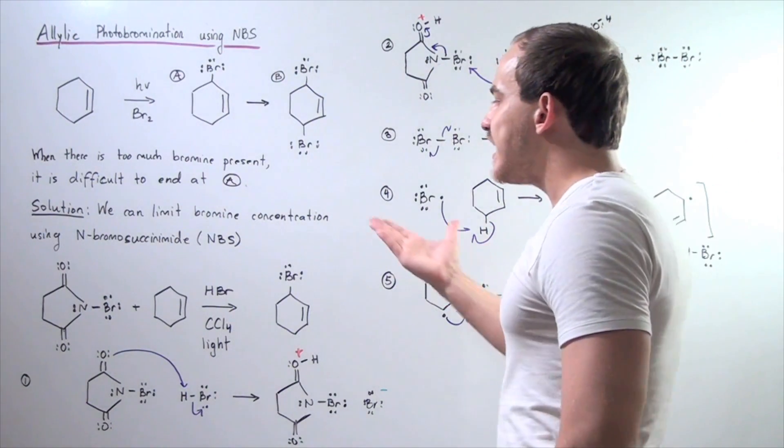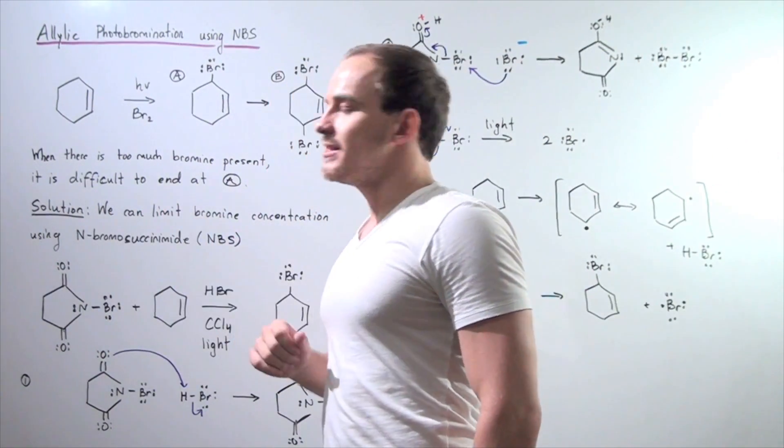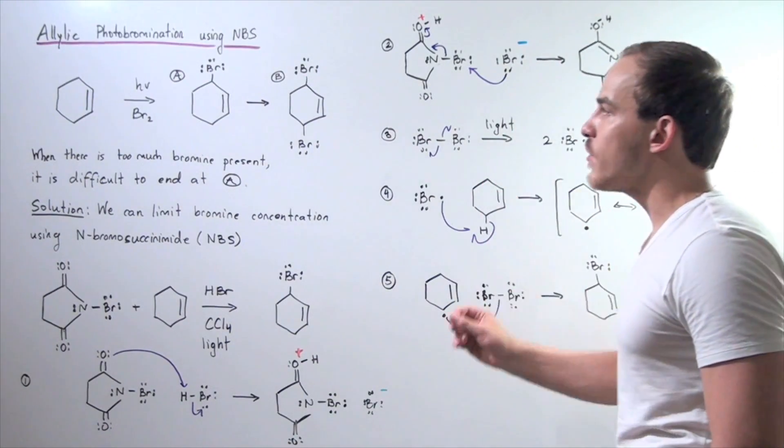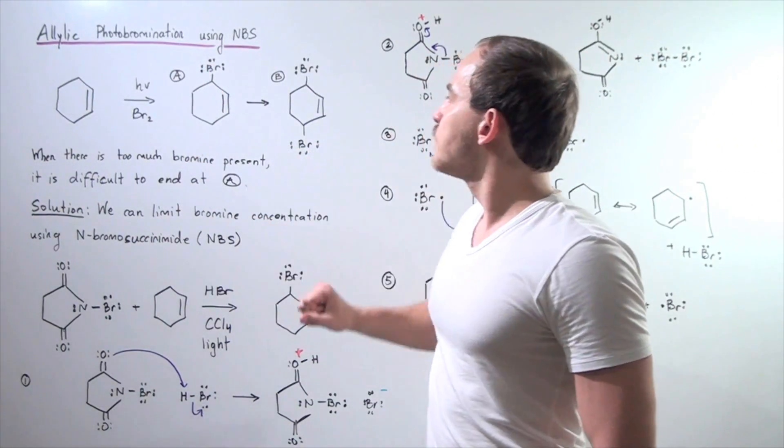So, once again, what NBS or N-bromosuccinimide does is it limits the concentration of our bromine so that we stay at A and don't go to B.